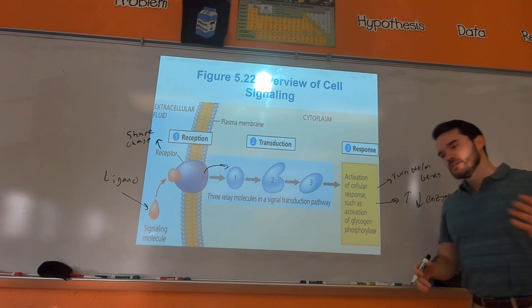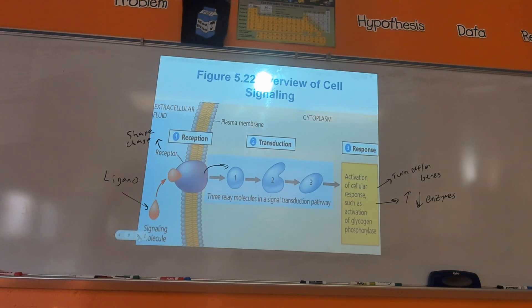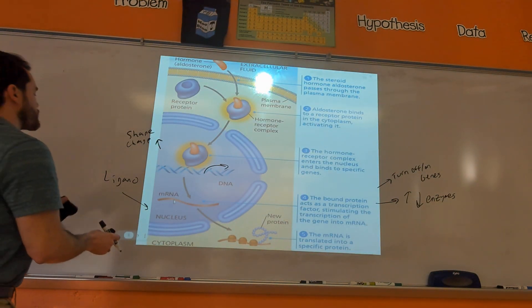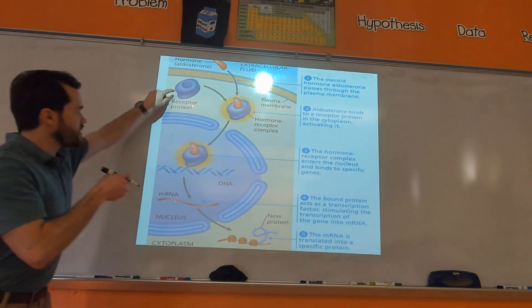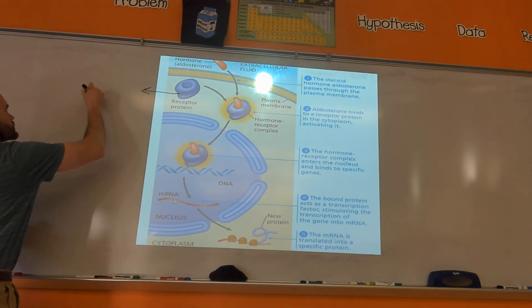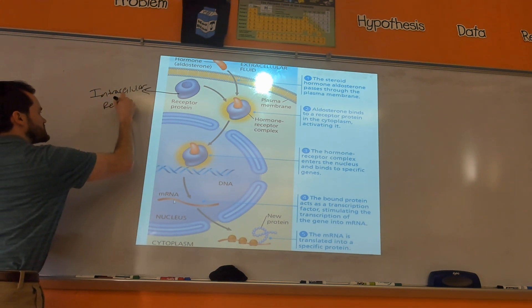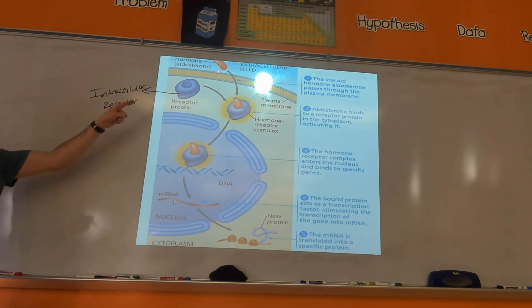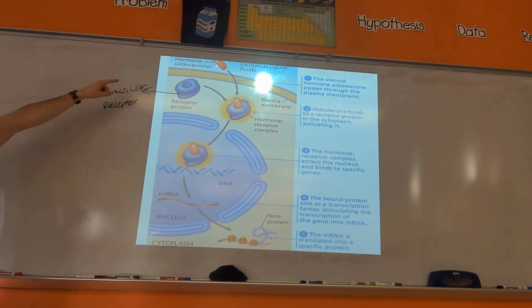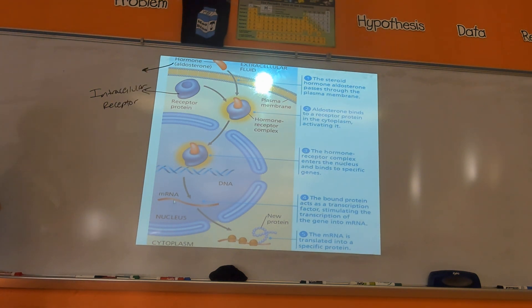Building upon that, let's go over intracellular receptors. Here is an intracellular receptor — it's a receptor that lives inside the cell, as opposed to a receptor that would reside in the cell membrane. Intracellular receptors are going to specialize in binding what kind of ligands? Think about that. Here they're showing the hormone aldosterone. What properties would this hormone need to have to bind to an intracellular receptor? It's a really important concept to understand.